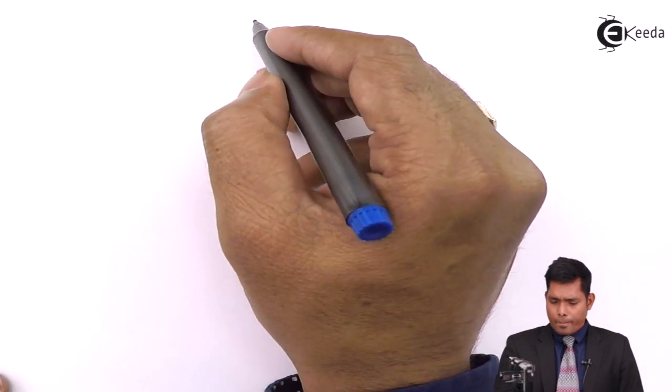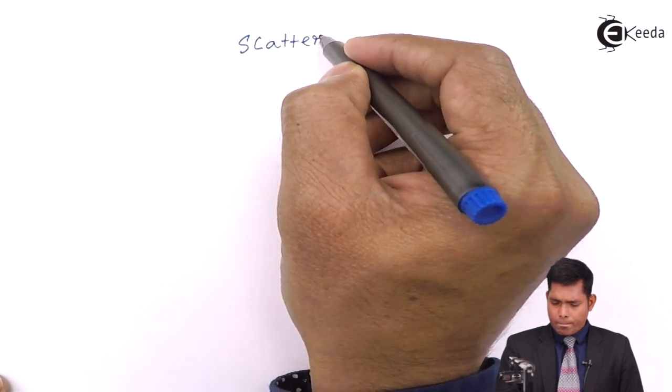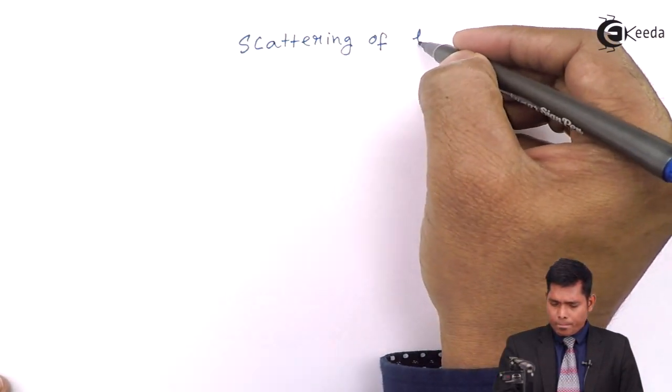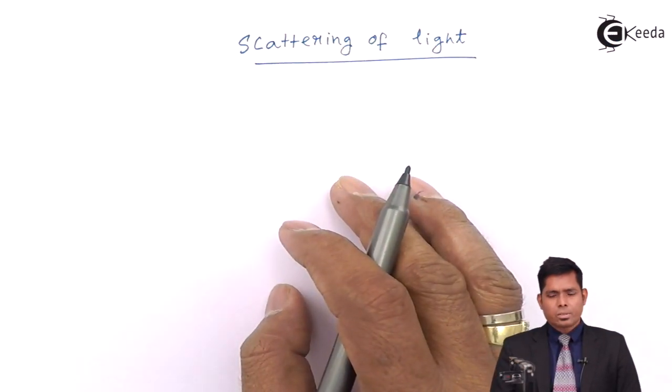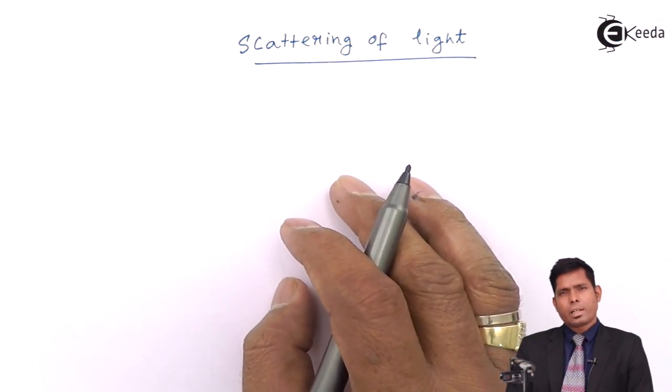Students, we will discuss scattering of light. Scattering means the direction is not fixed. Reflection means the direction is fixed.